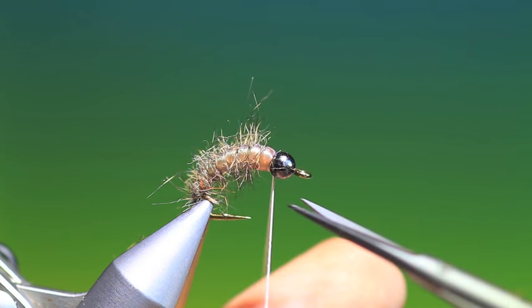Now we can dub up the head and tighten it in behind the bead. Just need to brush that out afterwards. And then we'll give it a whip finish, nice, right behind the bead head. Nice and tight. Then we can remove.